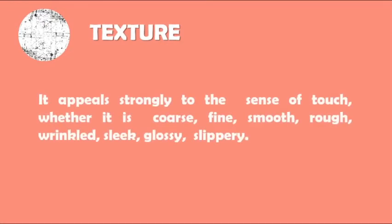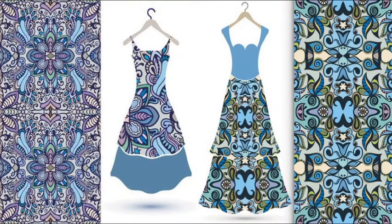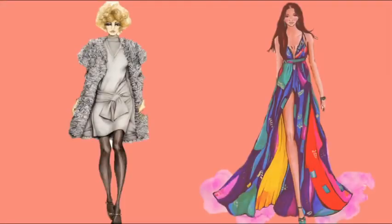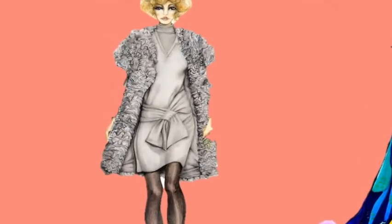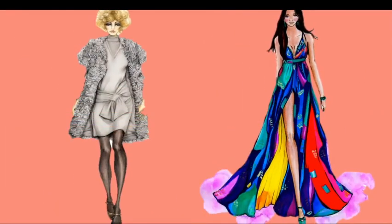Texture is another important element that can determine a lot — it appeals strongly to the sense of touch, whether it's coarse, fine, smooth, rough, wrinkled, sleek, glossy, or slippery. Textures, as well as lines, can create illusions. One must choose textures for clothes that will harmonize the overall design. A soft wool gives a quite different effect from the gloss and sheen of satin in an evening dress. Bulkier, rough fabrics tend to increase the perceived size of the wearer, whereas smooth fabrics decrease it.